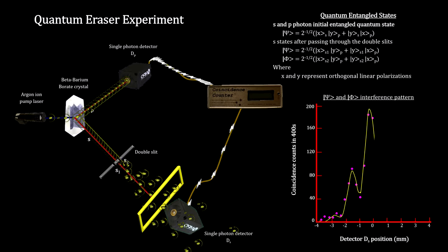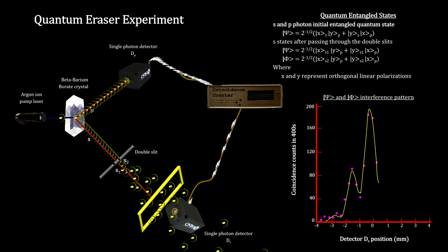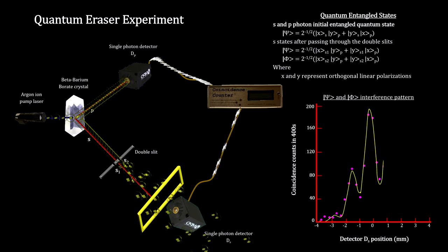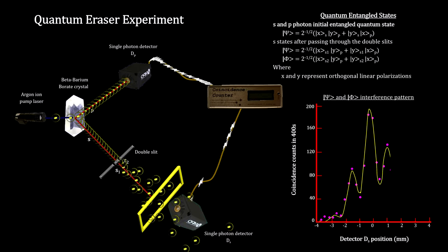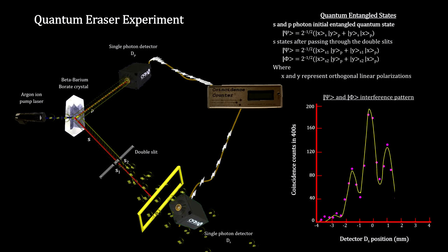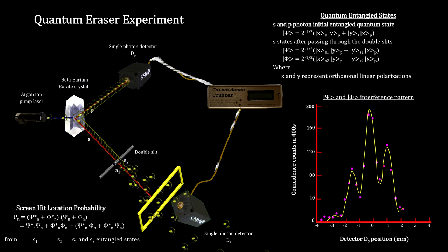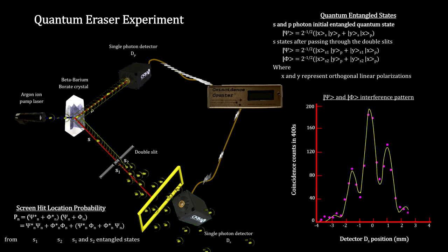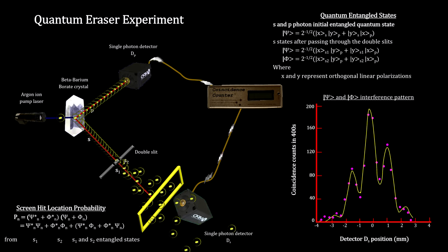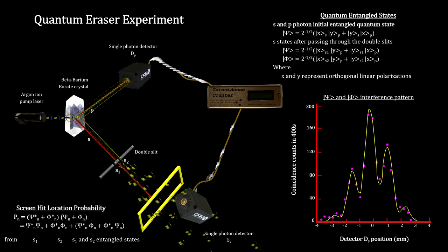As we did with the double-slit experiment, we keep in mind the quantum state of the particles, both initial and after the S photon passes through the double-slit. Remember that it is the interaction between the two superposition states on the far side of the double-slit that creates the interference pattern.